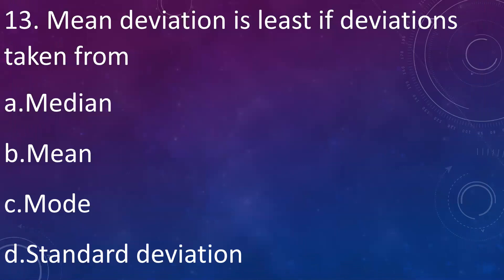Mean deviation is least if deviations are taken from: A: median, B: mean, C: mode, D: standard deviation. Answer is A: median. When we take deviations from the median, our mean deviation will be minimum.